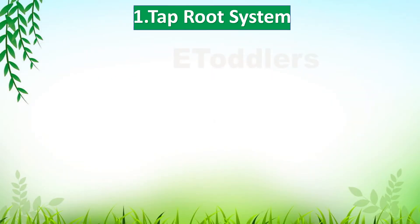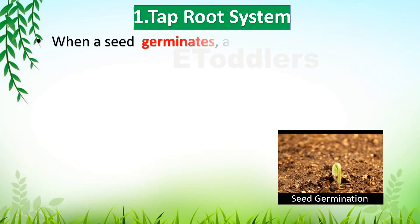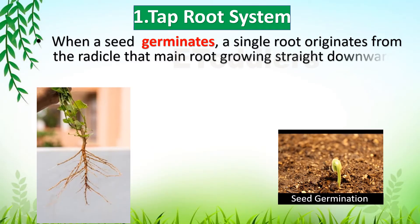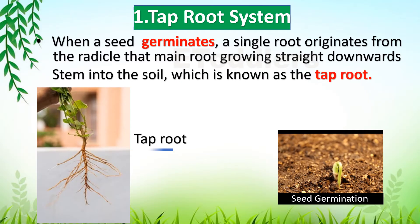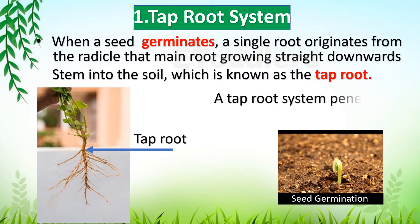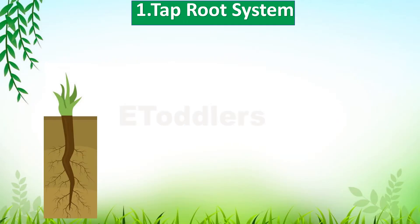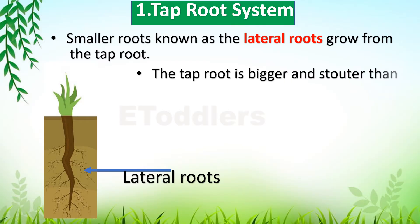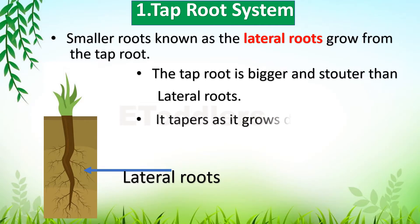Tap root system: When a seed germinates, a single root originates from the radicle. That main root grows straight downwards into the soil, which is known as the tap root. A tap root system penetrates deep into the soil. Smaller roots known as lateral roots grow from the tap root. The tap root is bigger and stouter than lateral roots, and it tapers as it grows downwards.